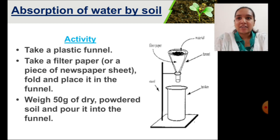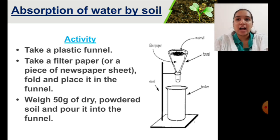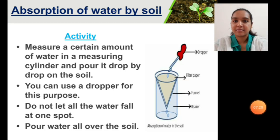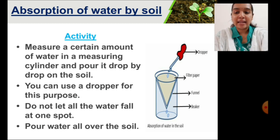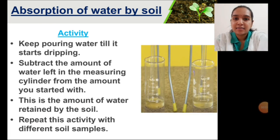First, take a plastic funnel and properly place a thin paper in it. Now weigh some amount of dry powdered soil without any grass, glass materials, or minerals, and pour the soil sample into the funnel. Before pouring water, place the funnel on a transparent cylindrical glass or jar. Take a measured amount of water and pour it drop by drop over the soil using a dropper, pouring all over the soil, not only at one place. Keep pouring until the water starts dripping from the funnel.